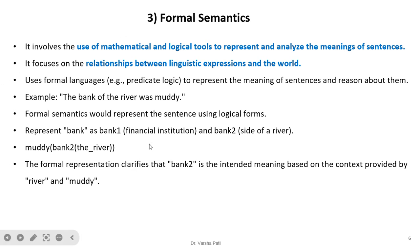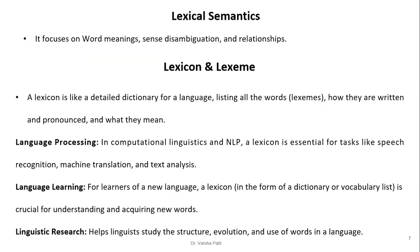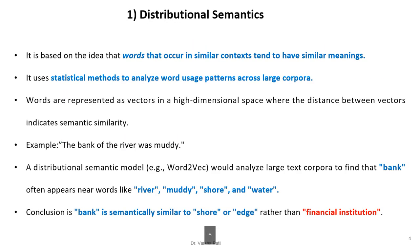For example, in the sentence 'the bank of the river was muddy,' formal semantics would represent the sentence using logical form, treating 'bank' as having two senses: financial institution and river bank. Statements like 'muddy(bank), beside(bank, river)' help determine that whenever 'river' and 'muddy' appear together, 'bank' refers to the river bank. We write such statements from the corpus using predicate logic and make decisions based on them.